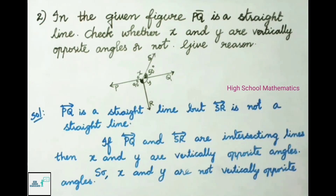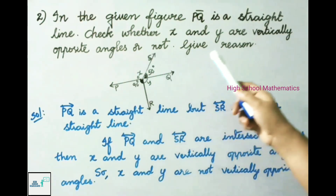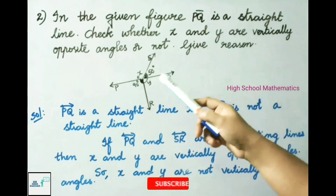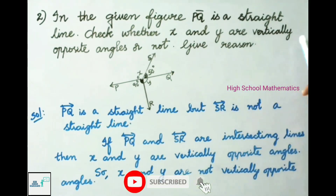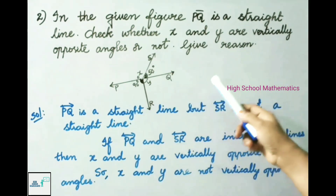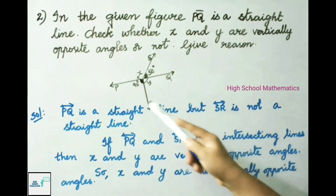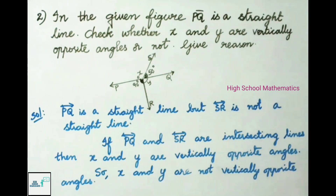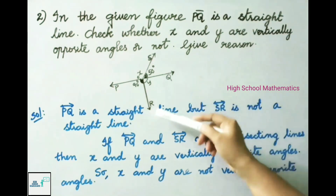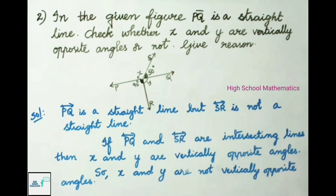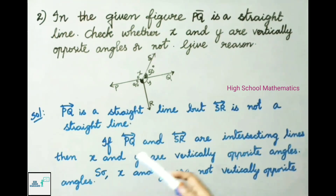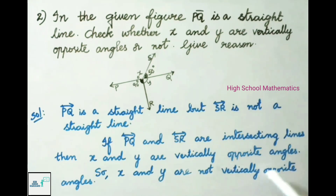Question number 2: In the given figure, PQ is a straight line. Check whether X and Y are vertically opposite angles or not, and give a reason. From the figure, PQ is a straight line, but SR is not a straight line. If PQ and SR were intersecting lines, then X and Y would be vertically opposite angles. So, X and Y are not vertically opposite angles.